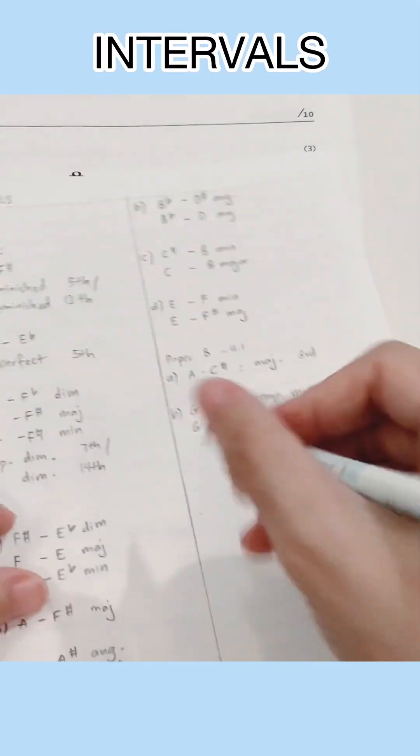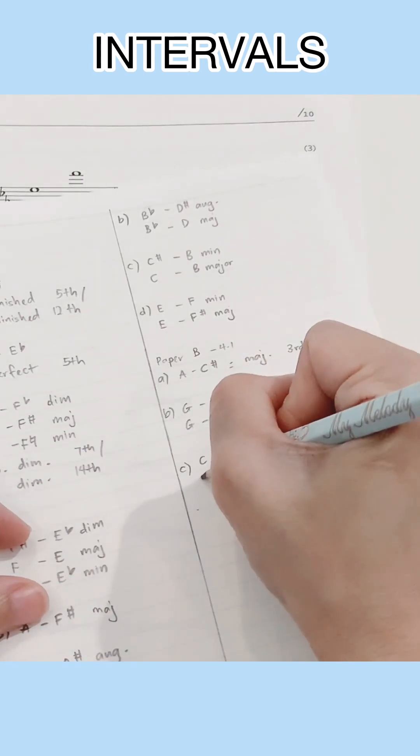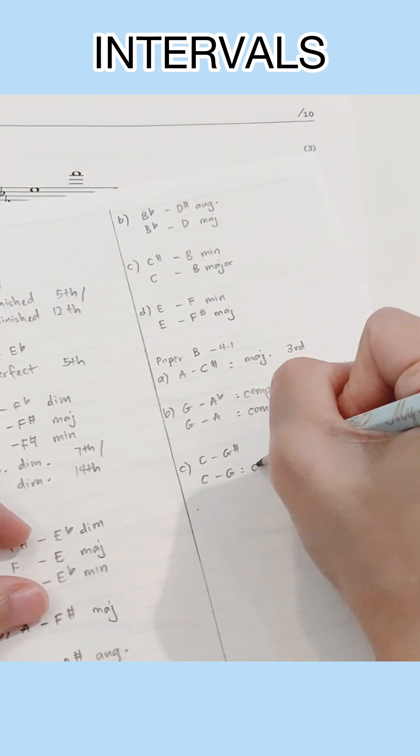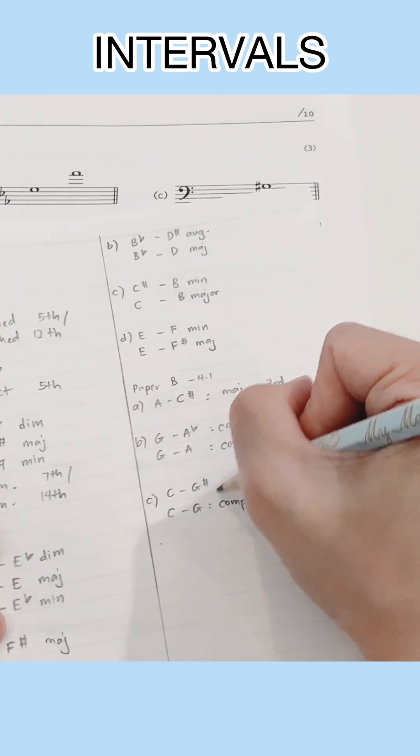Finally we have C to G sharp which is a fifth. Now in C major, G is a perfect fifth and given that this is more than an octave, it's a compound perfect fifth.